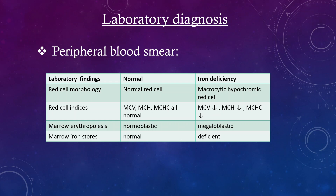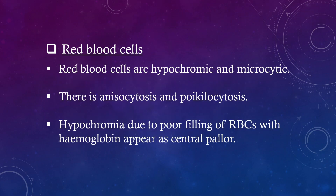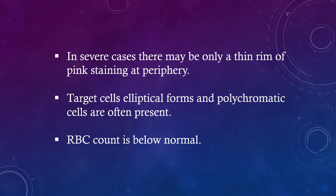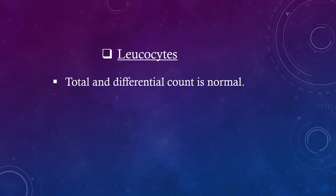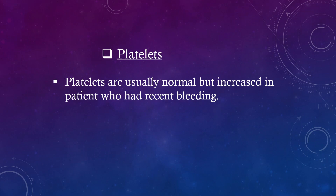Marrow erythropoiesis is normoblastic for normal and megaloblastic for iron deficiency. Marrow iron stores are normal in a normal individual and deficient in iron deficiency. Red blood cells are hypochromic and microcytic with anisocytosis and poikilocytosis. Hypochromia is due to poor filling of RBCs with hemoglobin, appearing as central pallor. In severe cases, there may be only a thin rim of pink staining at the periphery. Target cells, elliptical forms and polychromatic cells are often present. RBC count is below normal. Reticulocytes are normal or increased in number. Total and differential leukocyte count is normal. Platelets are usually normal but may be increased in patients with recent bleeding.